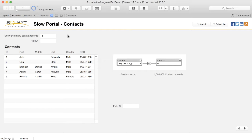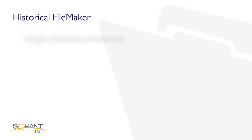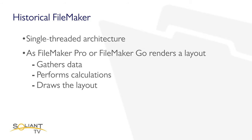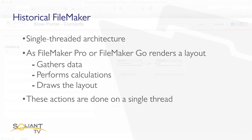Now, if I enter in a really big number, for example a million, then it's going to take a while for all those records to be downloaded and for the portal to be displayed completely. And historically, FileMaker clients like Pro and Go have operated on a single thread, which means that as FileMaker Pro and Go renders a layout, gathers all the data including for any portals on the layout, performs whatever calculations are necessary and draws the layout, all of that work was done using a single thread.